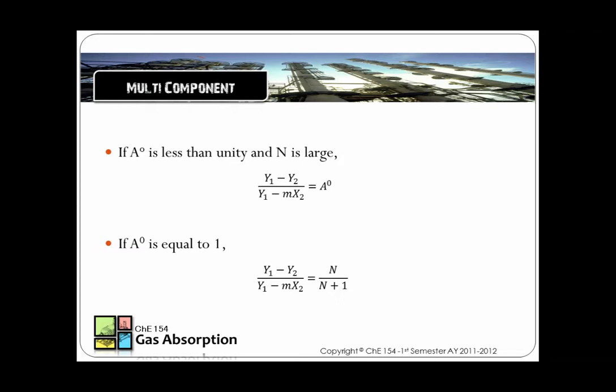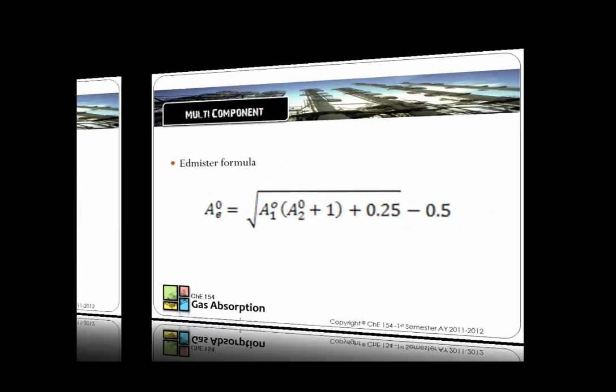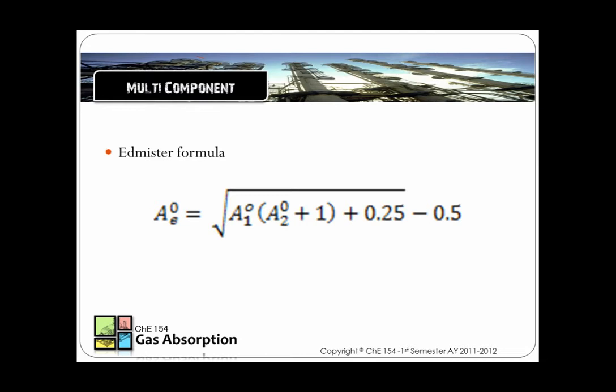The Kramsler formula can be simplified by assuming that X2 is 0 if the solvent is solute-free. The Kramsler formula can be simplified depending on the conditions. The Edmister formula can be used if the absorption factor is not the same throughout the column.